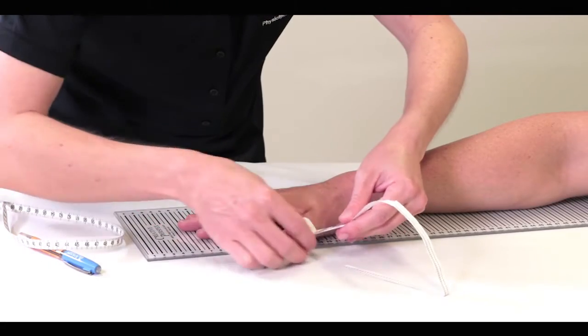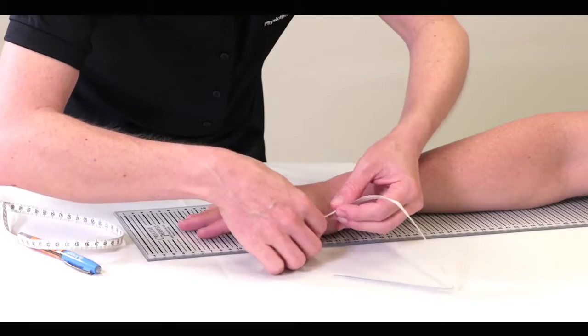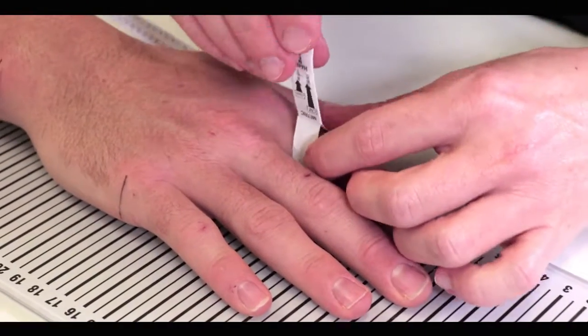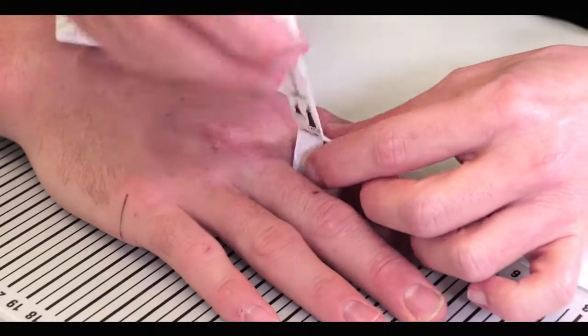Fingers should be measured distal to the web space with a small narrow measuring tape if possible to allow more accurate results. These tapes are available from garment suppliers.